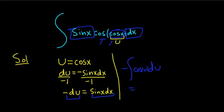Now we just have to integrate cosine. What's a function whose derivative is cosine? We're going backwards. Well, sine. So this will be negative sine of u plus c.